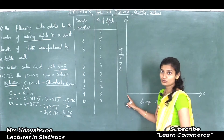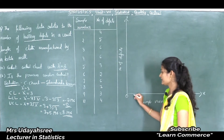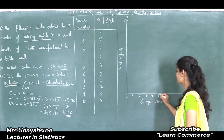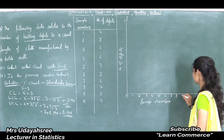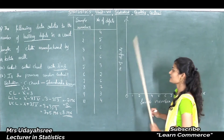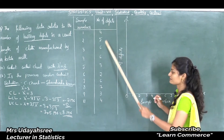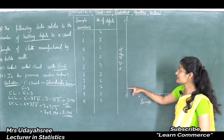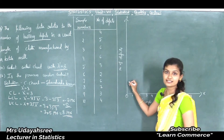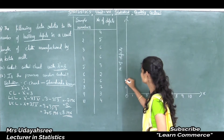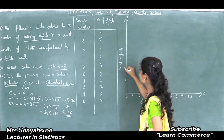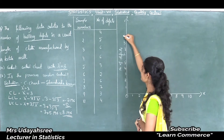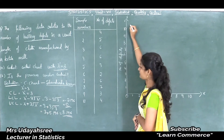For the x-axis scale, 1 centimeter is equal to 1 unit, with origin at 0 and markings 1, 2, 3, 4, 5, 6, 7, 8, 9, and 10. For the y-axis scale, also 1 centimeter is equal to 1 unit, with markings 1, 2, 3, 4, 5, 6, 7, 8, 9, and 10. I will stop there.